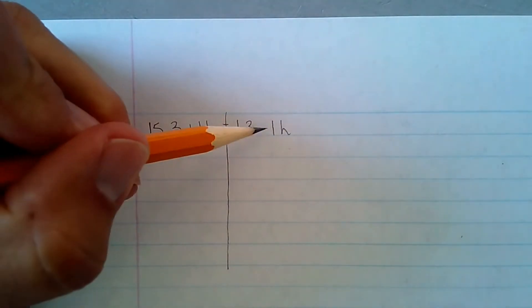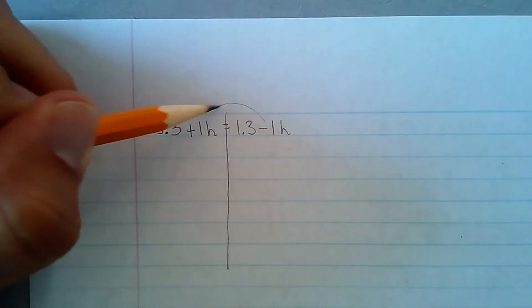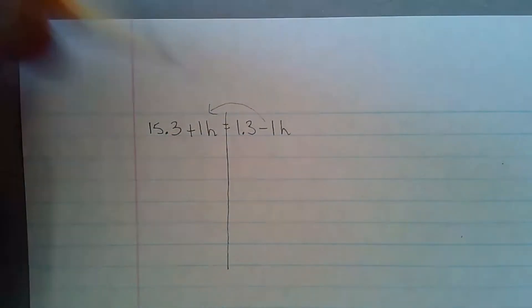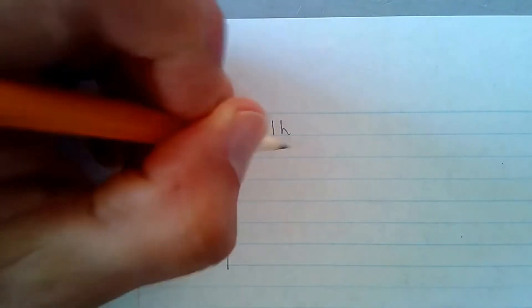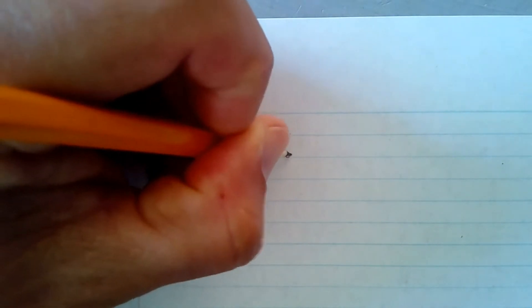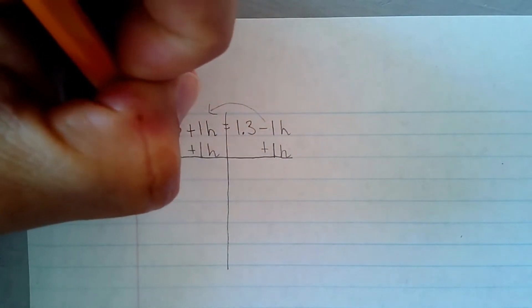I think what I'll do is I'll deal with the minus 1h. I'm going to bring that over to the left. And in order to do that, in order to combine these two, I have to use inverse operations. And that's going to be pretty easy.